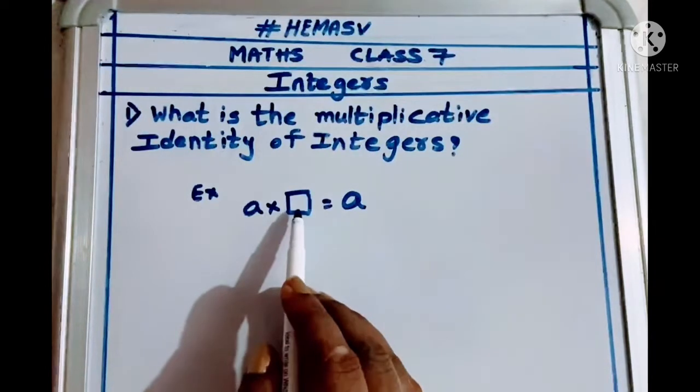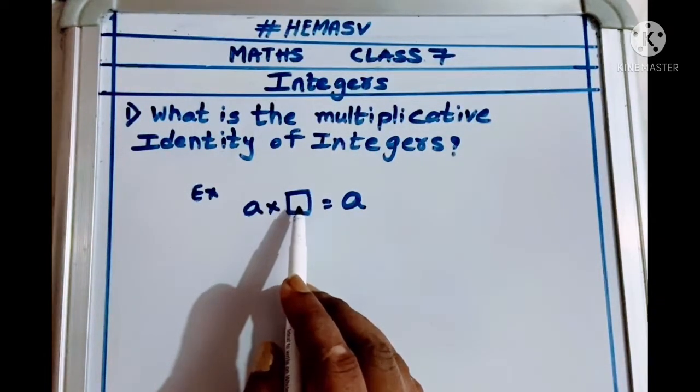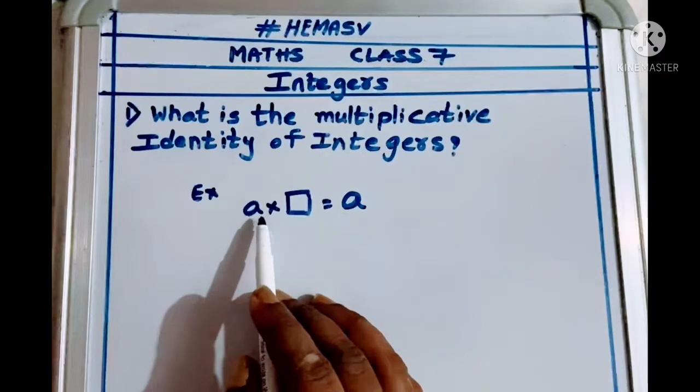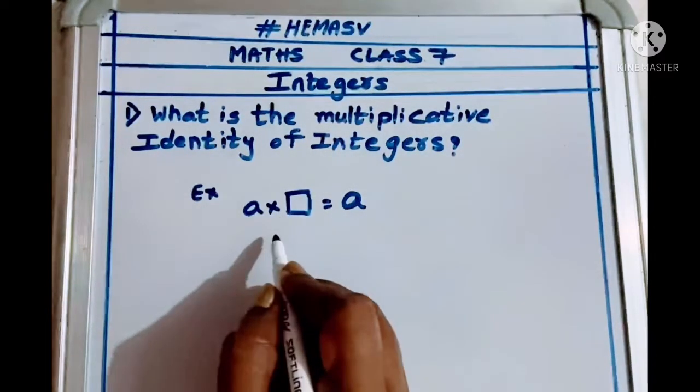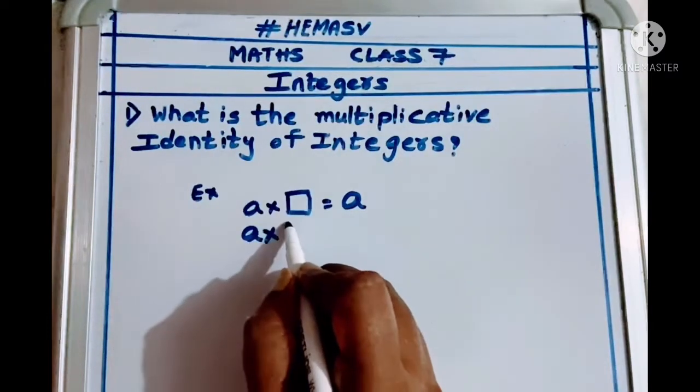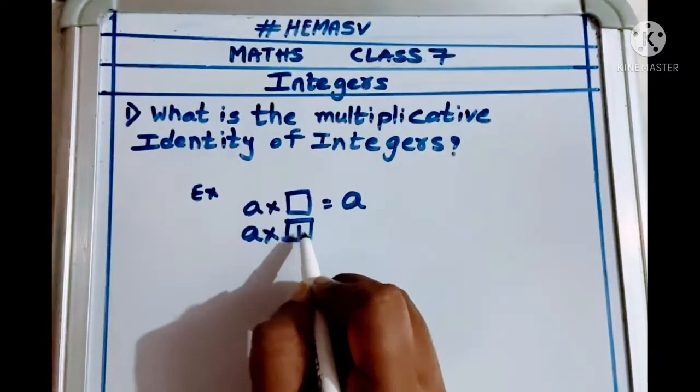What should be added? What should be the number multiplied to A and you should get the answer A. So what should be the number to multiply? It's number 1.